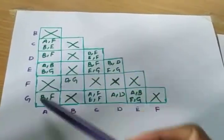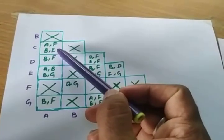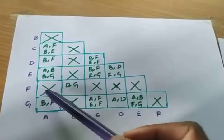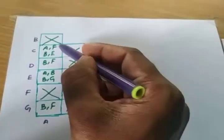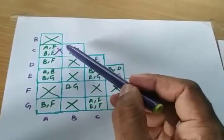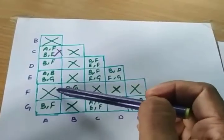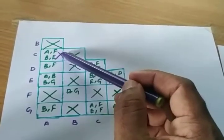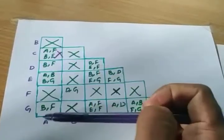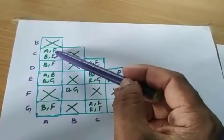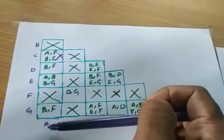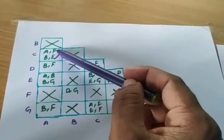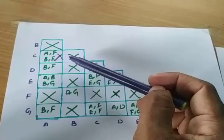In the second pass, first check the AC column — it has entry AF. Check AF: AF is crossed, so we can put a cross mark here. Why? Because AF is not equal. In the first pass these outputs were equal, but considering the states they are not equal. So wherever AF entry comes, we can cross that.